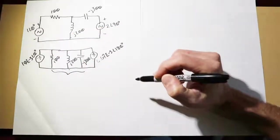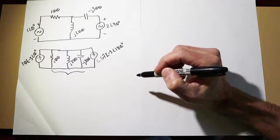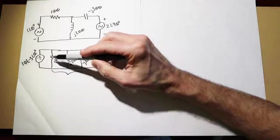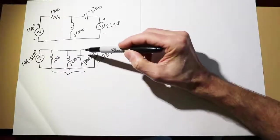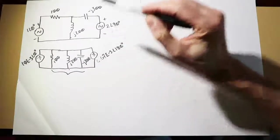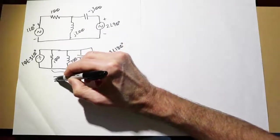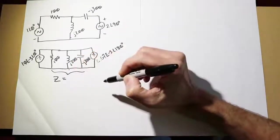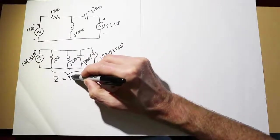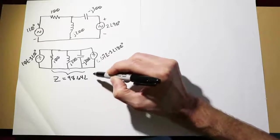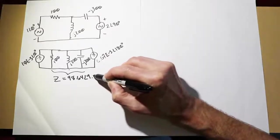we would short out this section and have the 2 volt source dropping over the capacitor of minus J300, giving us a current of 6.67 milliamps at an angle of 180 degrees. The combination of these three RLC components, we could simply do a reciprocal summation: 1 over 100 plus 1 over J200 plus 1 over minus J300, take the reciprocal of that. So the total Z will equal 98.64 ohms at an angle of 9.46 degrees.